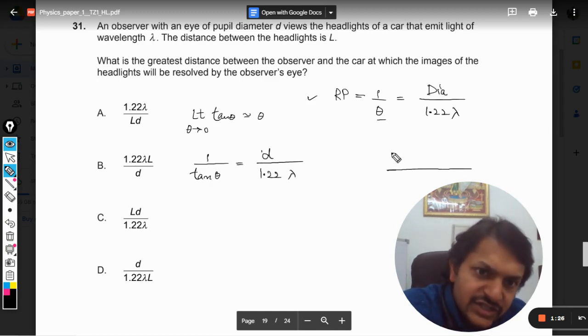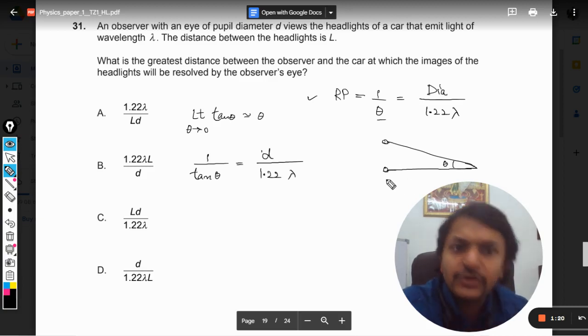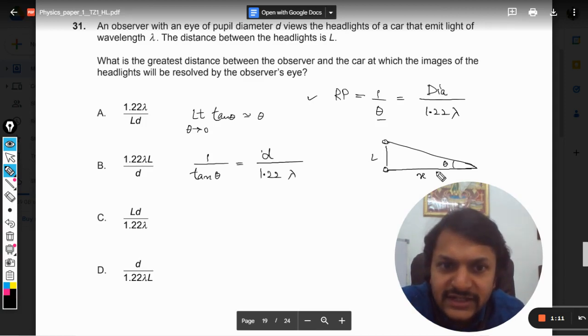If we just try to recall the images that I have shown you in my notes, this angle was shown as theta. This distance between the headlights is given as L. And this distance, I have chosen at x because that is what we need to find. Tan theta is equal to L by x.